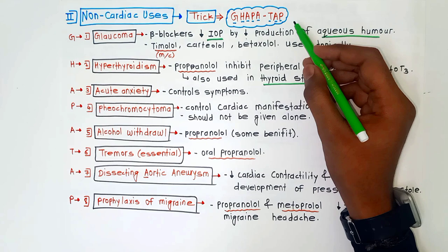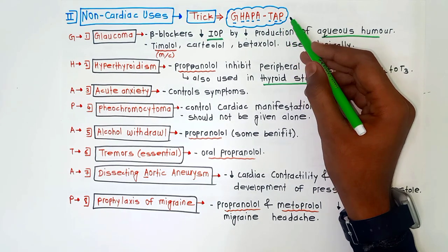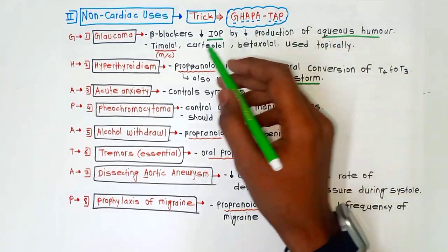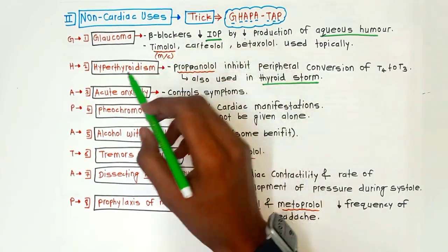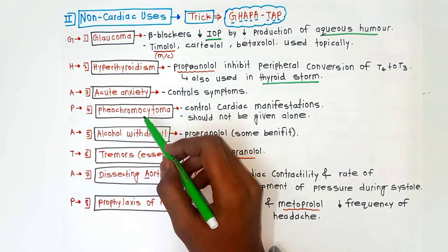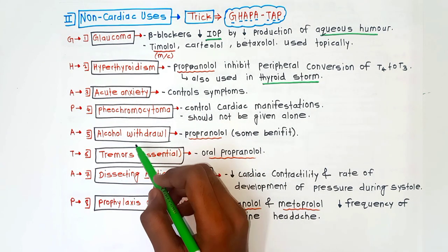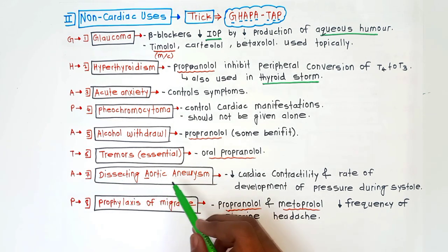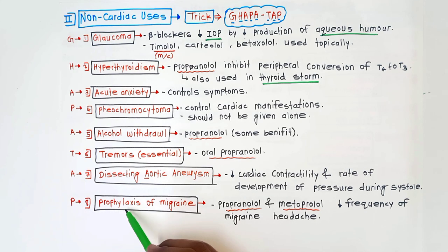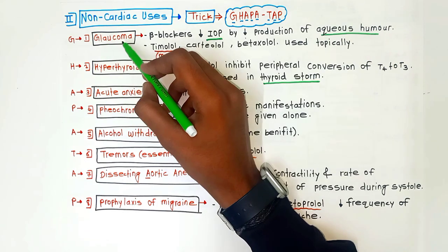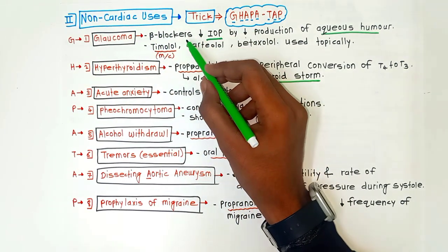Now the non-cardiac uses of beta blockers. The trick to remember is GHAPATAP — G for glaucoma, H for hyperthyroidism, A for acute anxiety, P for pheochromocytoma, A for alcohol withdrawal syndrome, T for tremors (essential tremors), A for dissecting aortic aneurysm, and P for prophylaxis of migraine.